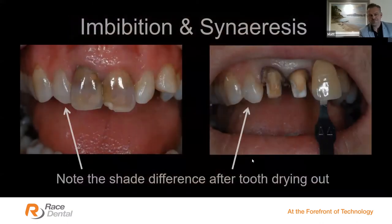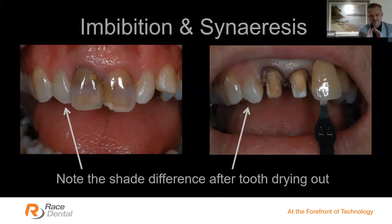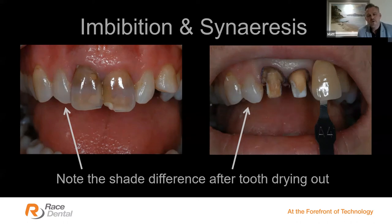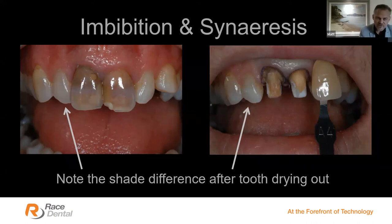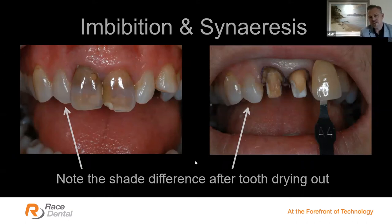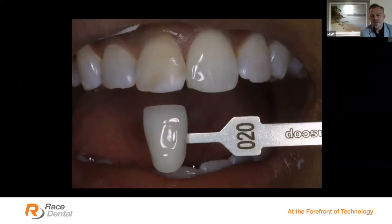Please ensure you take all your shade photos before you do anything. A lot of people prep the teeth and then take shade photos, but unfortunately when syneresis takes place, teeth can lighten by one, two, or even three shades, and rehydration can take up to three to four hours. You can see here how much lighter the tooth is after prep compared to beforehand. Please take all shade photos before you even get into the surgery, or train one of your team to do that for you. Get all photos before the teeth change shape or lose that water.